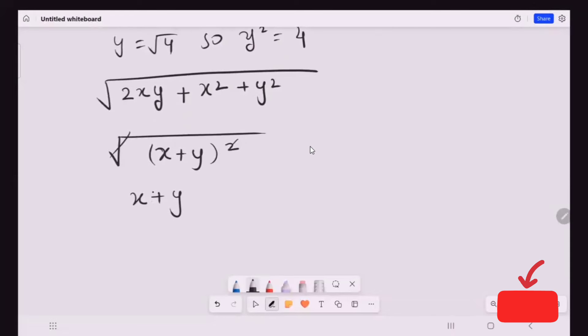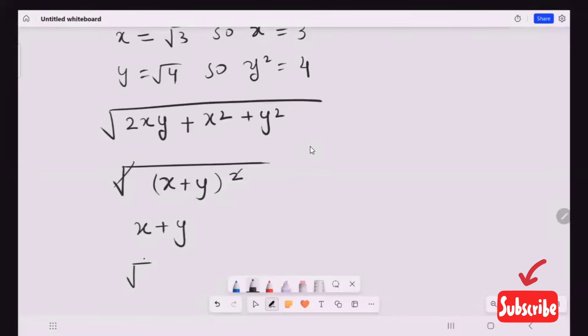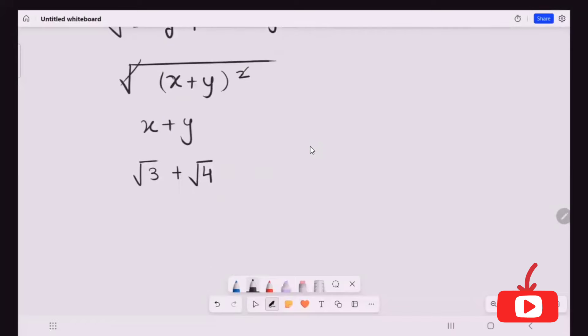Now our x and y value, that is radical 3 plus radical 4. So I'm going to solve this, plus 2. This is our solution.